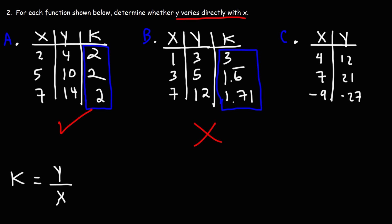Now let's move on to part C. Let's calculate K. 12 divided by 4 is 3. 21 divided by 7 is 3. Negative 27 divided by negative 9, that's also 3. So for this table, K is constant, which means yes, Y varies directly with X.